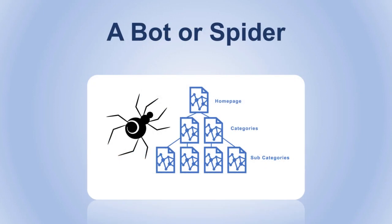And then we have a bot or a spider. These are also known as the crawlers of your page. These are the bots that visit your website and analyze its content piece by piece to actually index your website in a specific ranking in the search results. All of this is going to be based on your content's performance and other aspects.